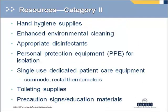While not the highest level of evidence, your plan would be set up to fail without a process for resource allocation. A resource plan addresses sufficient quantities of supplies for hand hygiene and enhanced environmental cleaning, a stock of appropriate disinfectants, PPE for isolation rooms, availability and locations of single-use dedicated patient care equipment such as commodes and rectal thermometers, and an emergency stock of toileting supplies, precaution signs, and education materials approved by your multidisciplinary team and administrators.